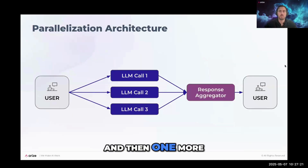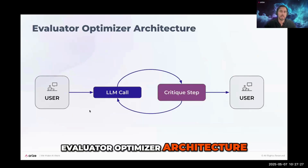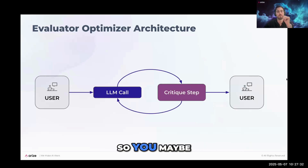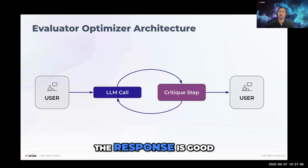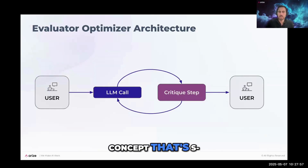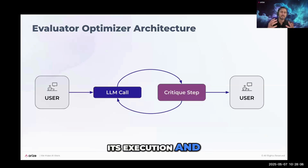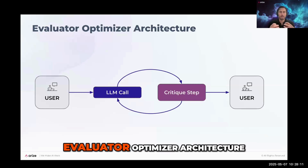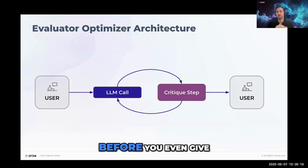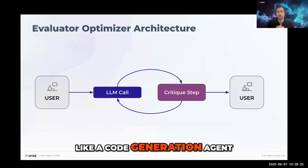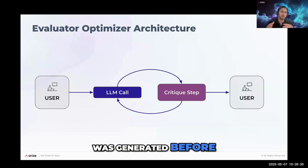The evaluator optimizer architecture introduces a critique step: you generate a response, then a critique step evaluates whether it's good enough to send to the user or whether you need to loop back and rerun certain parts. This concept is called reflection — the agent pauses and looks back at what it's done, deciding if any steps need improvement. You see this in code generation agents, where code is critiqued before being returned to the user.